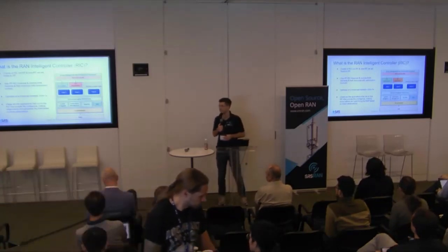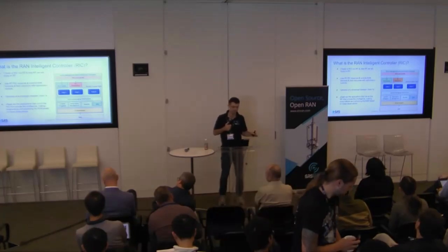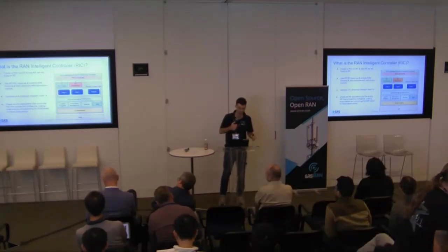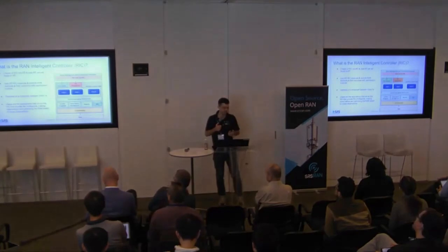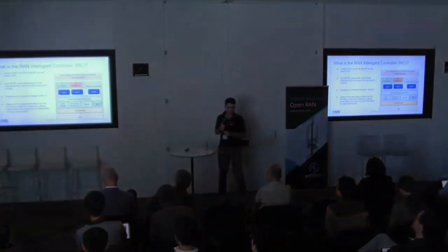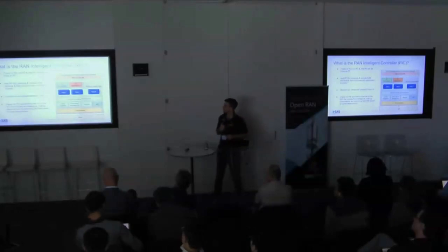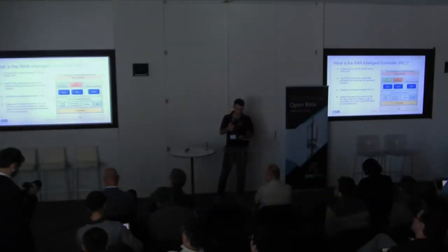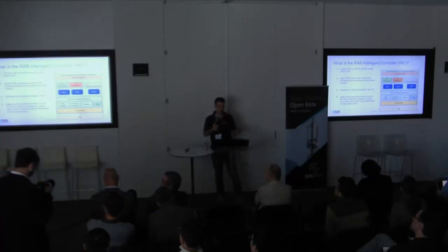There are two types of RIC: the near-real-time RIC and the non-real-time RIC. We're going to be talking about just the near-real-time RIC. The idea of the near-real-time RIC is it observes and controls RAN elements and optimizes them over the E2 interface. It has a timescale between 10 milliseconds and one second, and it's made up of four key components.